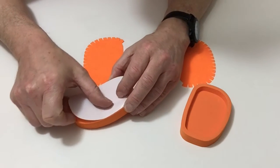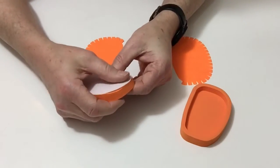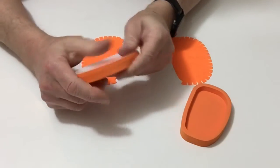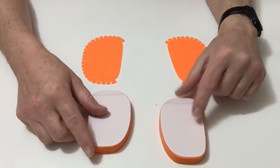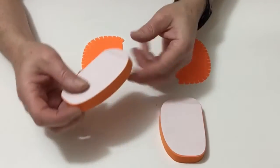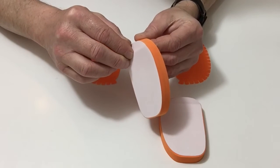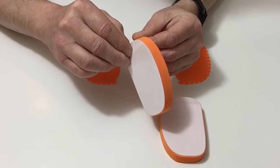Then just carefully smooth that out. Do that with both the shoes. Once you've done that, carefully remove the white backing paper.